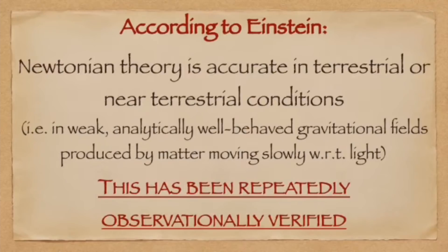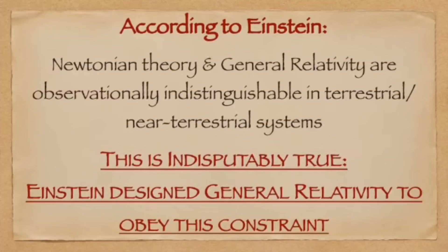Let's review. Einstein, like any sane individual, understood and accepted the observational evidence supporting the accuracy of Newtonian theory in a terrestrial setting. Einstein dedicated significant effort to ensuring that general relativity and Newtonian theory are in accord in terrestrial and near-terrestrial settings. Any claim that Einstein debunked, contradicted, disproved, or invalidated Newtonian theory is utterly mendacious gibberish.